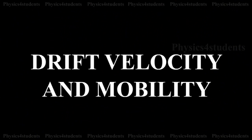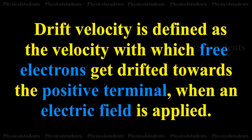Drift Velocity and Mobility. Drift Velocity is defined as the velocity with which free electrons get drifted towards the positive terminal when an electric field is applied.